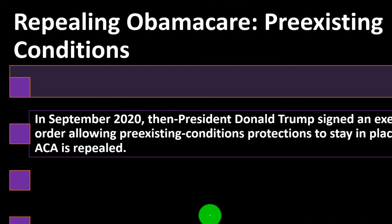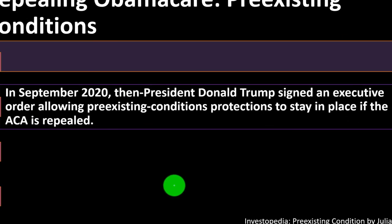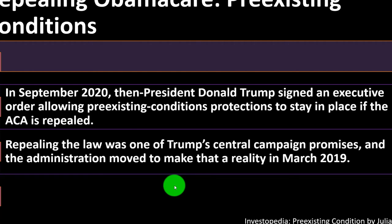Repealing Obamacare and pre-existing conditions: in September 2020, then-President Donald Trump signed an executive order allowing pre-existing condition protections to stay in place if the ACA is repealed. The idea was to repeal the Affordable Care Act because opponents didn't like the movement toward a single-payer system and wanted more competition instead. But repealing something that big after it's already been in place usually doesn't really happen. What ended up happening is they took the teeth out of the ACA by not penalizing people who don't have insurance, which eliminated the idea of forcing everyone to buy insurance to remove the free rider impact, while other pieces remained in place.